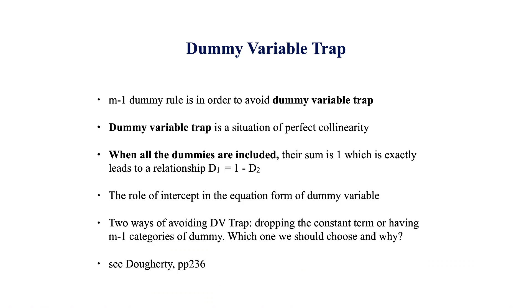Hello and welcome back to the lecture on Applied Econometrics. We are talking about dummy variables and we have been discussing different types of cases when dealing with them. In the previous lecture, we spoke about the possibility of including all dummy variables in the regression equation. We said there is a critical problem called the dummy variable trap. If I have m categories of a categorical variable, we include m minus 1 dummy variables in the regression equation to represent that particular category.